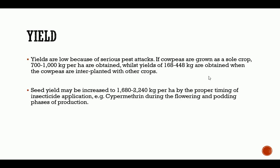Yields are low due to serious pest attacks. If cowpeas are grown as a sole crop, about 700 to 1,000 kg per hectare are obtained, while yields of 168 to 448 kg are obtained when cowpeas are interplanted with other crops. Seed yield may be increased to 1,680 to 2,240 kg per hectare by proper timing of insecticide application, such as using cypermethrin during the flowering and podding phases of production.